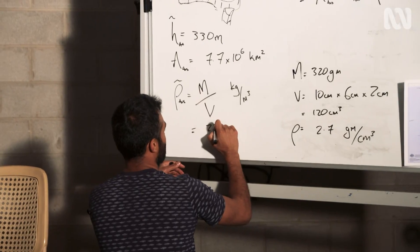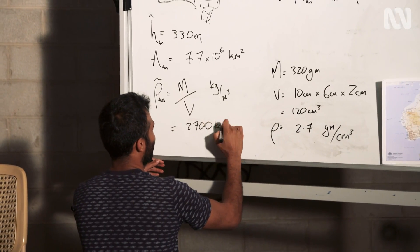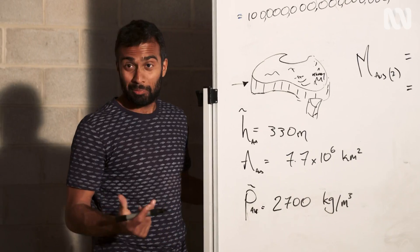Great. And so what's the volume of it, guys? 10 centimetres by 6, roughly, by about 2. Alright. That's 2,700 kilograms per cubic metre. And we can now plug the numbers in, I think.